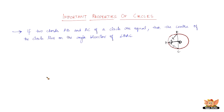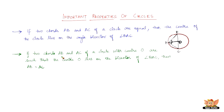The converse property states: if two chords AB and AC of a circle with center O are such that center O lies on the bisector of angle BAC, then AB equals AC. Using the same figure with chords AB and AC in a circle with center O, if center O lies on the angle bisector of angle BAC, then AB is equal to AC.